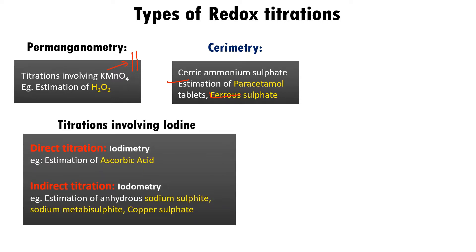Titrations involving iodine: iodimetry and iodometry. Iodimetry is direct titration; iodometry is indirect titration. Iodimetry is used for estimation of ascorbic acid, and compounds like sodium sulfite, sodium metabisulphite, and copper sulfate can be quantitated using iodometry, the indirect titration.